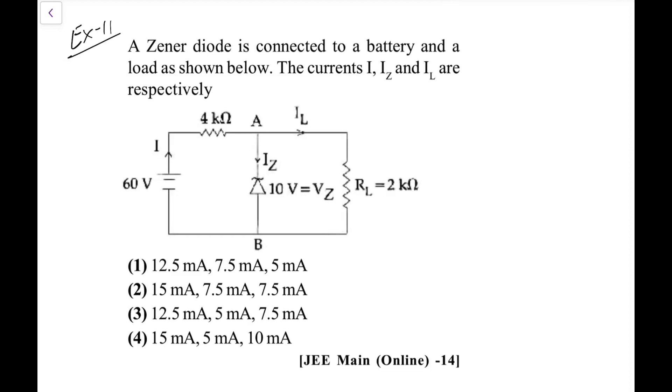Next one, a zener is connected to a battery and a load as shown in figure. The current I, I_Z and I_L, like the one we did above. First of all this is 10. So because it is in - this is the load resistor, this is protected, it will always have 10 volts here. So this will be 50 volts here.